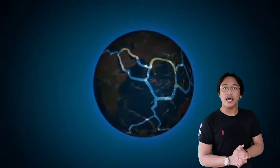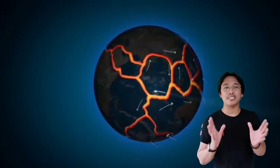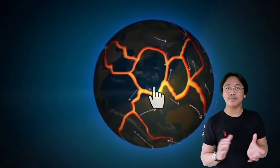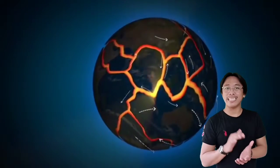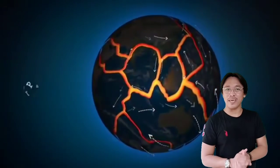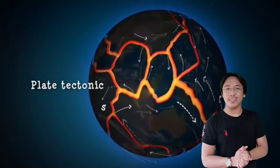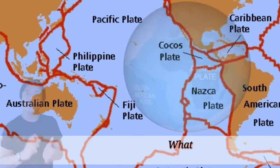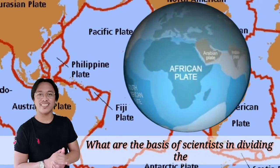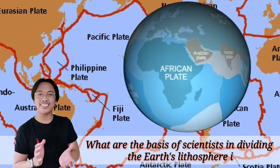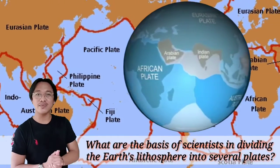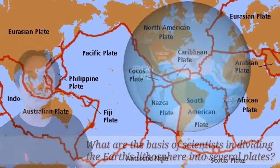Previously, you learned that the Earth's crust is divided into segments of landmasses called plates, and these plates move constantly in various ways known as plate tectonics. Now, what are the basis of scientists in dividing the Earth's lithosphere into plates? Let's take a look at these lessons.